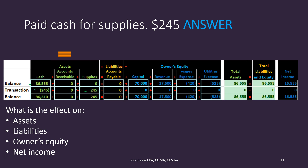Cash went down and supplies went up — no effect on total assets. What happened to liabilities? No effect. What happened to owner's equity? No effect. This is a strange outcome where a transaction occurred and two accounts were affected, yet the effect on the accounting equation is none. That's a tricky test question. It will be different when we get to debits and credits.